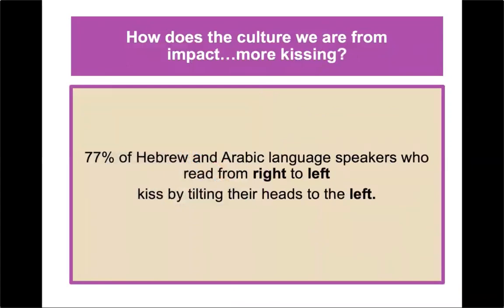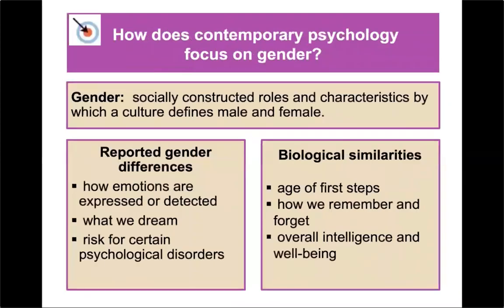How does contemporary psychology focus on gender? Gender is a socially constructed role and characteristic by which a culture defines male or female. Reported gender differences include how emotions are expressed or detected, what we dream, risk for certain psychological disorders, biological similarities, age of first steps, how we remember and forget, and overall intelligence and well-being.